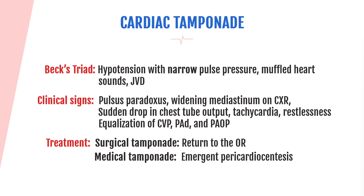Pulsus paradoxus can be seen with an arterial line as a decrease of greater than 10 mmHg in systolic blood pressure during inspiration. The reason for this drop is that when you breathe in, inspiration increases thoracic pressure, but when you have fluid surrounding the heart — as in cardiac tamponade — inspiration decreases venous return, causing the systolic blood pressure to drop. Other clinical signs include a widening mediastinum on chest X-ray, a drop in chest tube output, tachycardia, restlessness, and with a pulmonary artery catheter, equalization of CVP, diastolic PA pressure, and PAOP.